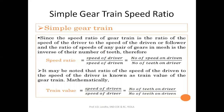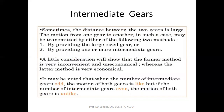We can calculate the speed ratio for the simple gear train using the given formulas. Sometimes the distance between two gears is large, so in that case we can provide a last-size gear or one or more intermediate gears. These intermediate gears are called idler gears.